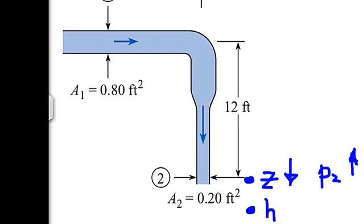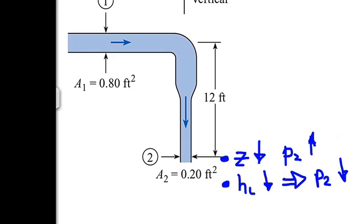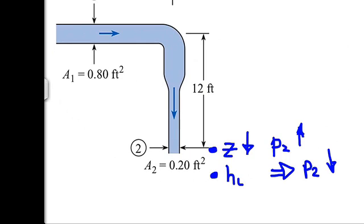And so head loss, or viscous effects, causes the pressure at section 2 to be lower. And I should clean this up here. I should just simply say the head loss causes the pressure at section 2 to be lower.